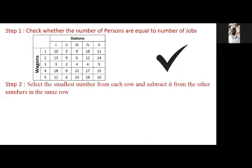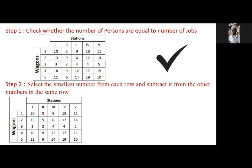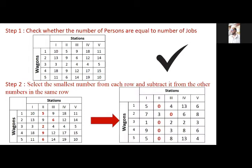Next step: select the smallest number from each row and subtract it from the other numbers in the same row. In the first row, the minimum number is 5; second row minimum is 6; third row is 2; fourth row is 9 and fifth row is 6. I will subtract these numbers from the respective rows. After subtracting, I will get the matrix like this.